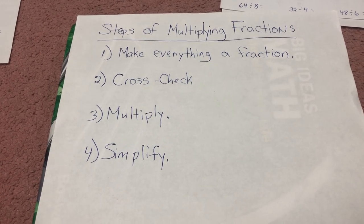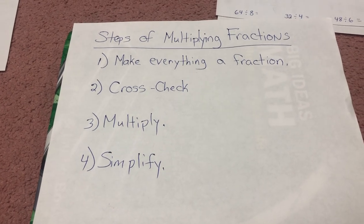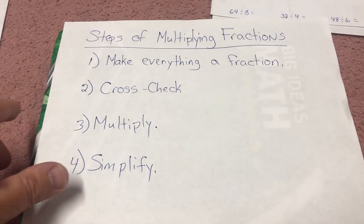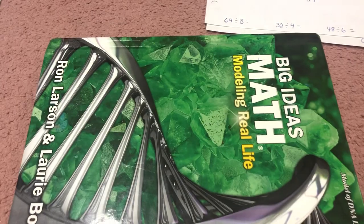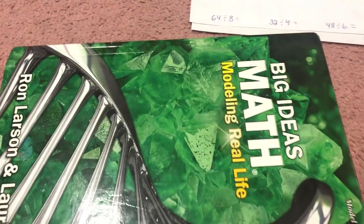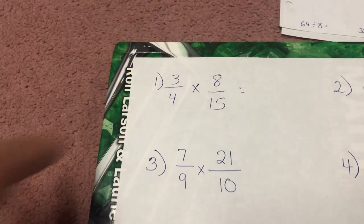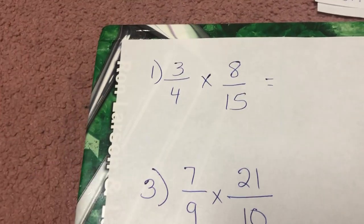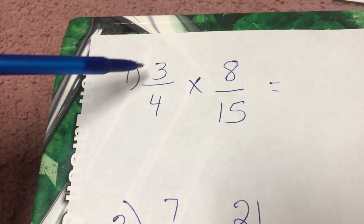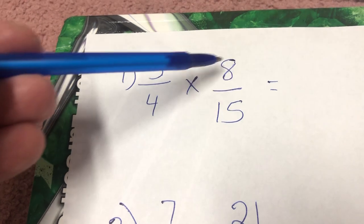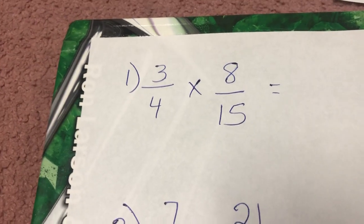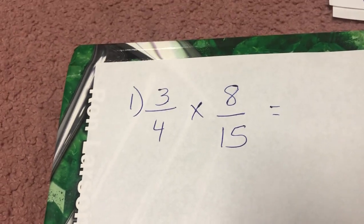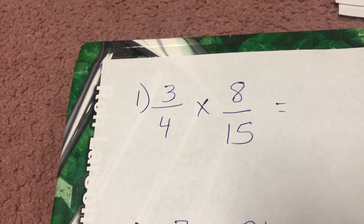So let's actually look at what those steps mean. Step one, if we look at example one, was to make everything a fraction. Well, everything is already a fraction here — three-fourths times eight over fifteen — everything already is a fraction, so we can leave that alone.